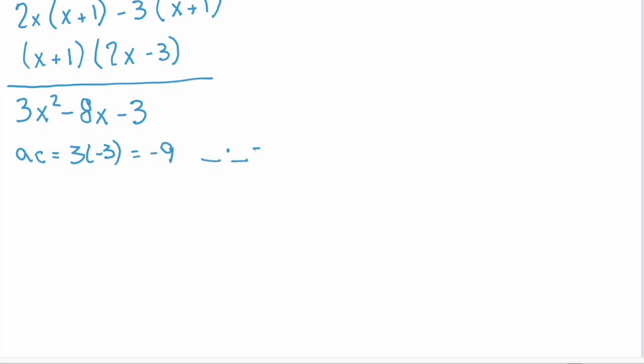So two numbers that multiply to negative 9, and our b is negative 8, so they need to add to negative 8. And those two numbers would be negative 9 and 1.